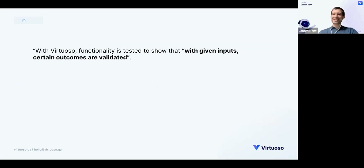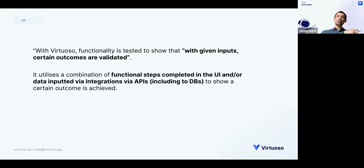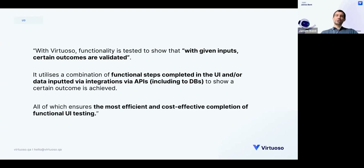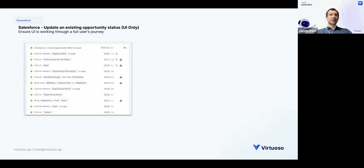With Virtuoso, functionality is tested to show that with given inputs, certain outcomes are validated — that's really what we're talking about with functional UI testing. What that opens up is the ability to combine functional steps completed in the UI with, or completely replaced by, data inputted via integrations and APIs, including connecting to databases, which can then show an outcome is achieved — all ensuring the most efficient and cost-effective completion of functional UI testing.